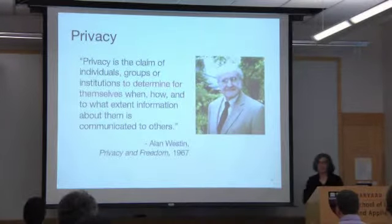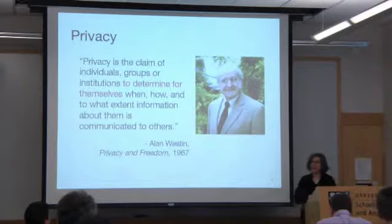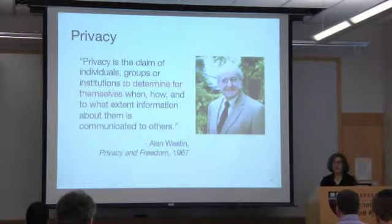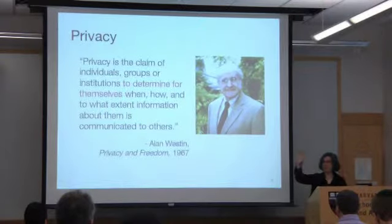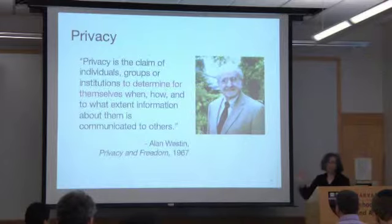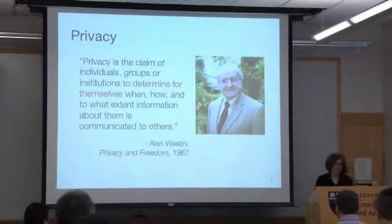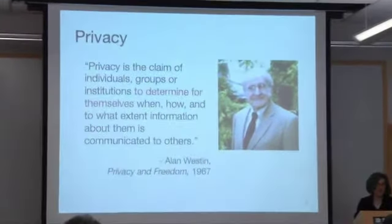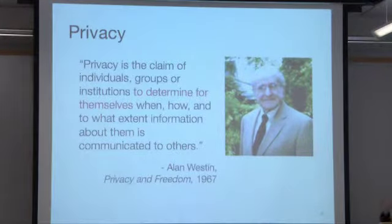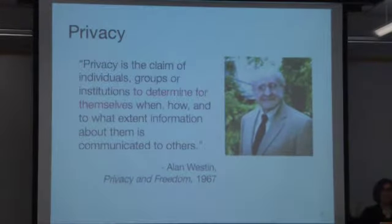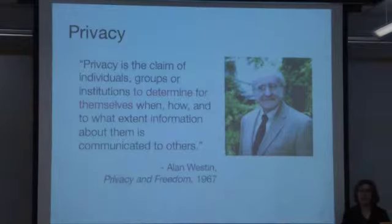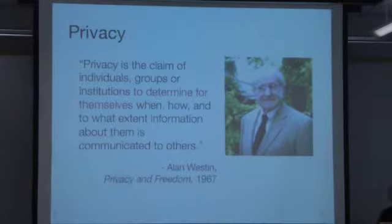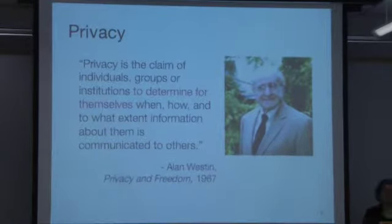This definition comes from Alan Westin, who is kind of one of the fathers of privacy in the United States and privacy policy work. He just passed away a few months ago. He wrote a very seminal book back in 1967. Nobody reads the whole book, but they do read the first chapter, which has this definition: privacy is the claim of individuals, groups, or institutions to determine for themselves when, how, and to what extent information about them is communicated to others. This is a definition of privacy as control — that I choose whether you have access to my information — and it's the definition on which a lot of U.S. privacy policy is based.